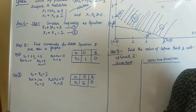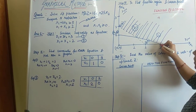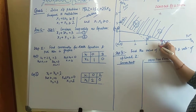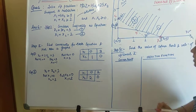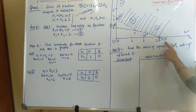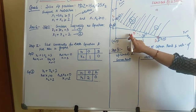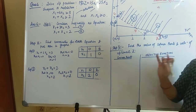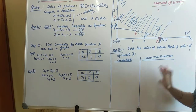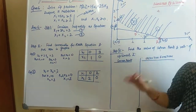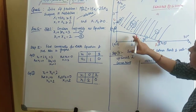This is the problem of minimization of z. For that, first we have to find the corner points. Labeling them as A, B, and C: point A has the value (3, 0), point C has the value (0, 2 — wait, 0, 3), and B is the intersection of the two lines. The feasible region is A, B, C.